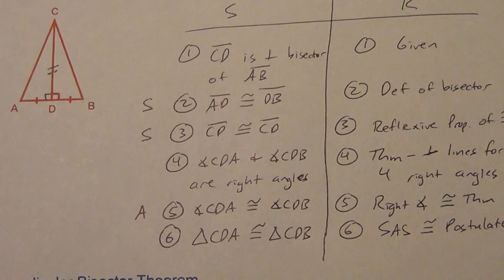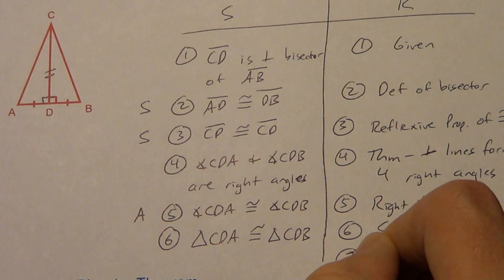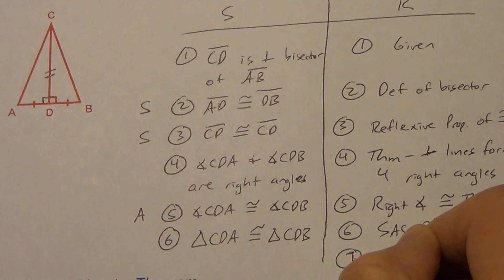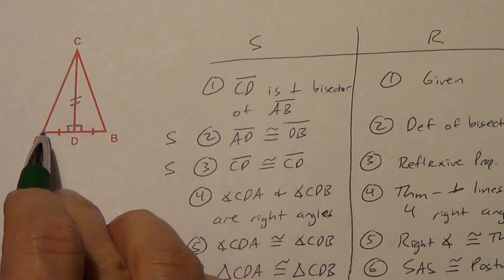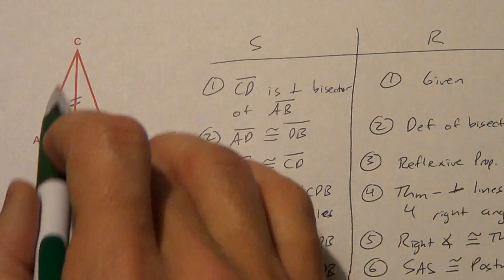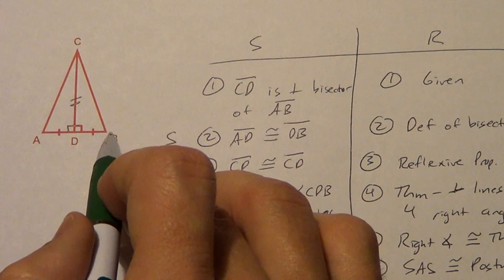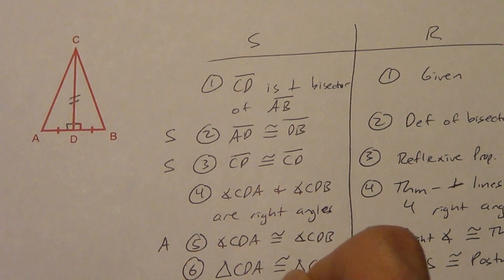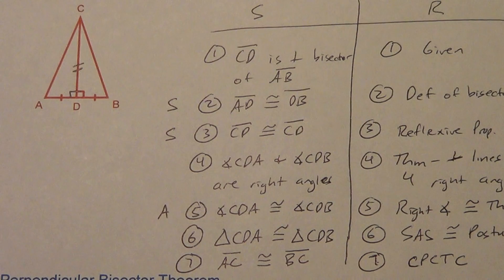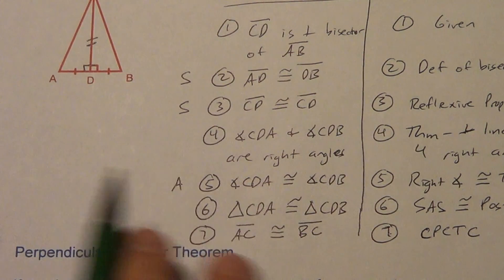We're almost done — one more step. What do we often use right after we prove triangles are congruent? CPCTC — corresponding parts of congruent triangles are congruent. I could say angle A is congruent to angle B, or angle ACD is congruent to angle BCD, or AC is congruent to BC. The one we want is the side: AC is congruent to BC. That's what we just proved — the perpendicular bisector theorem.